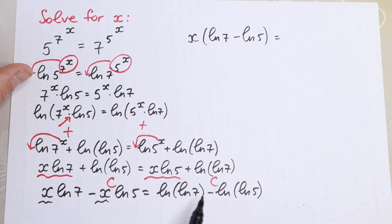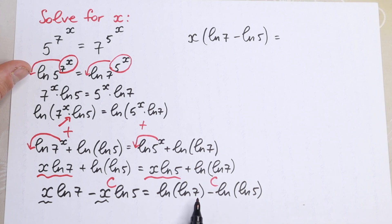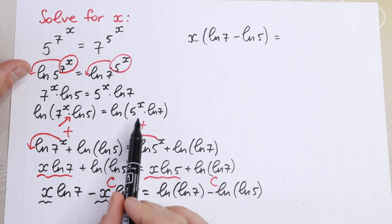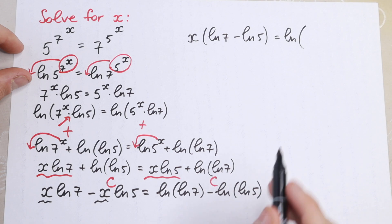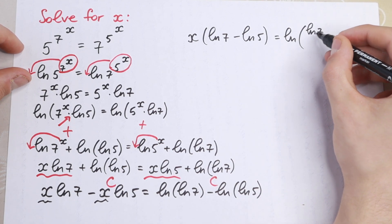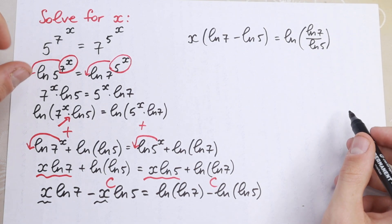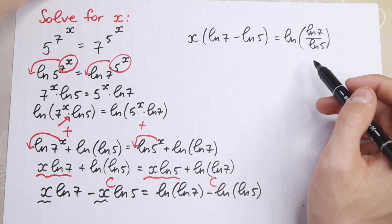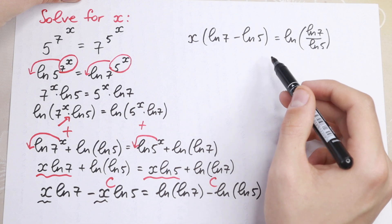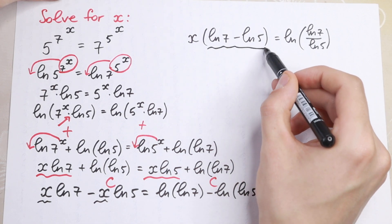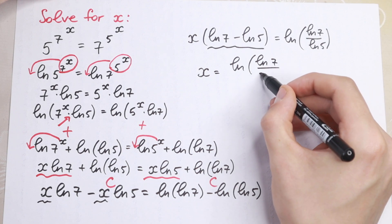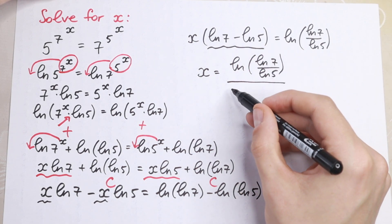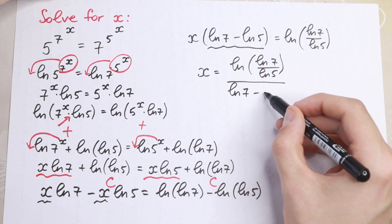On the left side we have a difference of two logarithms. Using the log quotient rule, subtraction becomes division, so natural log 7 minus natural log 5 equals natural log of 7 divided by 5. On the right hand side we also have only constants. So we divide both sides by this expression, and our x equals natural log of natural log 7 divided by natural log 5, all divided by natural log 7 minus natural log 5.